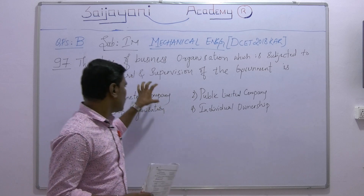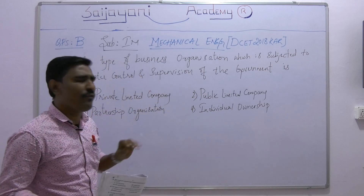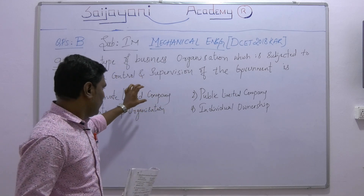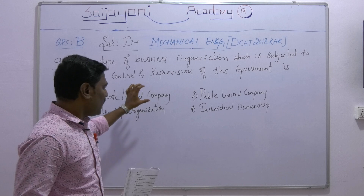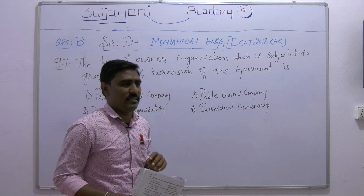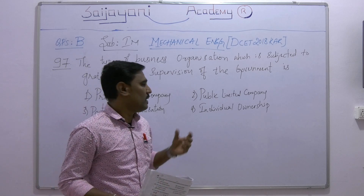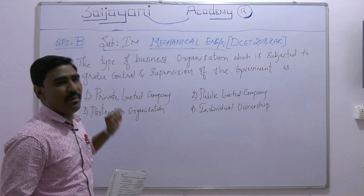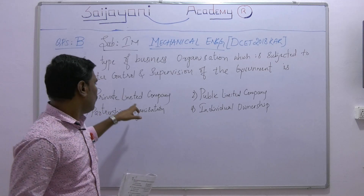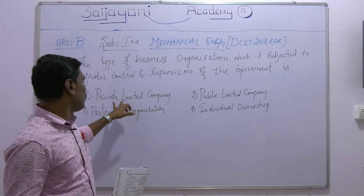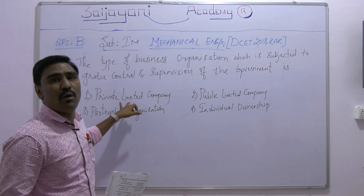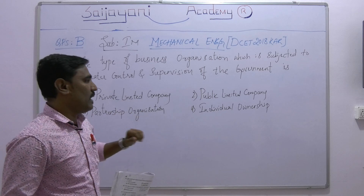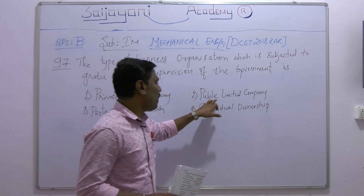First, the private limited company consists of around 50 members and the risk bearing is less. As the name itself says, it is a private limited company, so the government does not get involved in this company.